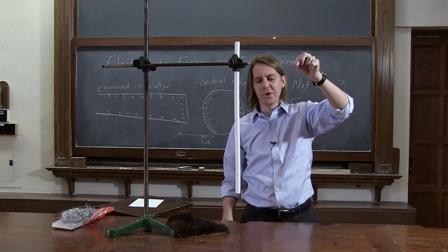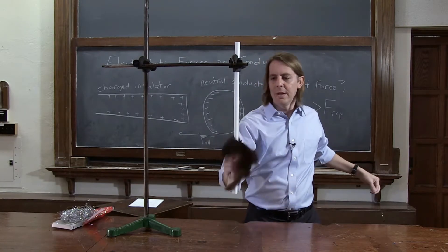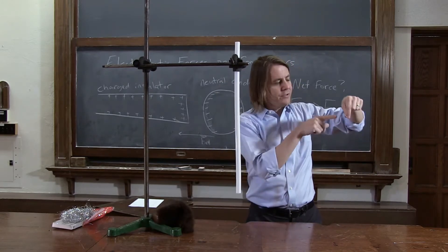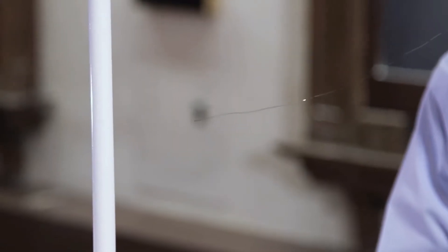The charge in the icicle is being redistributed, and if this thing is negative, then the negative charges in the icicle are being pushed towards me, which leaves the other end positive.